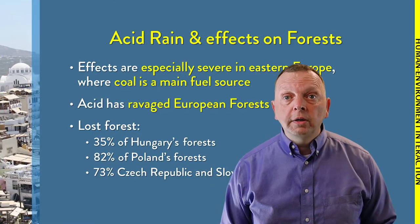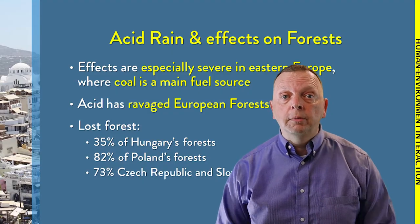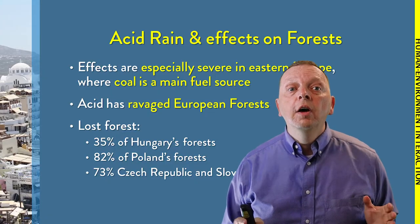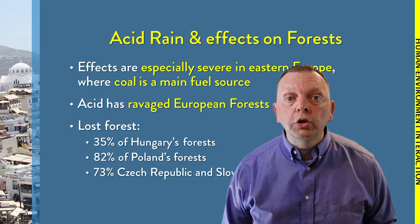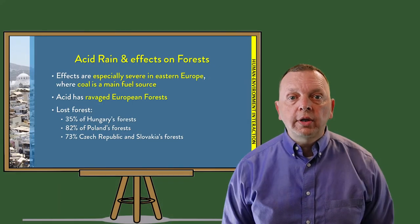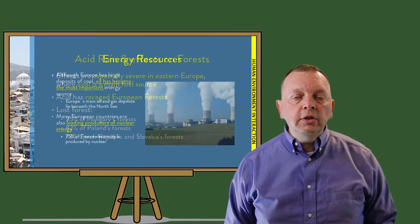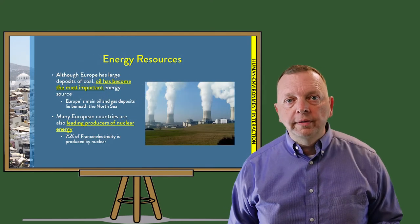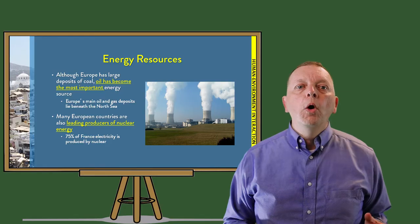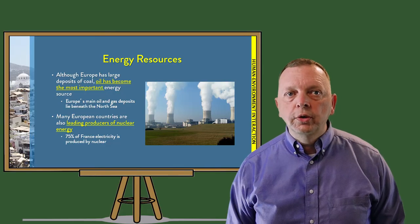35% of Hungary's forests, 73% of the Czech Republic and Slovakian forests, and an astonishing 82% of the Polish forests have been lost due to this acid rain problem. While coal is the primary source of electric energy in Eastern Europe, for the rest of Europe, oil and natural gas are the important energy sources.